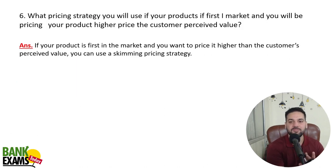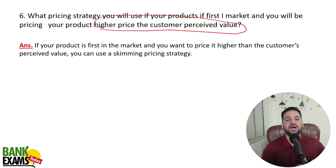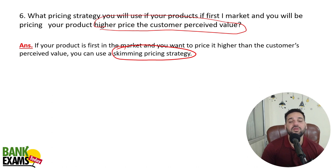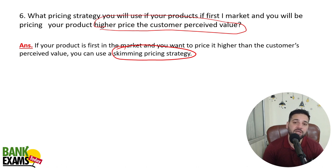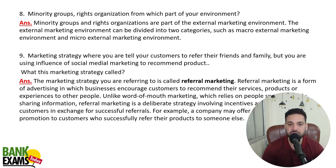What pricing strategy do you use if you price the product higher than the customer's perceived value? That is the skimming pricing strategy — you are placing the price above the perceived value. You bring the product to market first and sell it at a high price. A good current example is Apple's VR headset, which they've just launched at a premium. We've already covered this in the course.